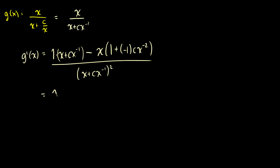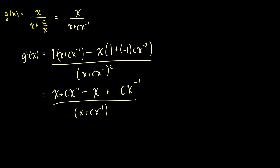We can simplify this a little bit. So this will be x plus cx to the negative 1 minus x, and then we subtract negative 1 cx to the negative 2, so we're adding x times c times x to the negative 2, which is really just cx to the negative 1. And this is all over x plus cx to the negative 1 squared. Our cx to the negative 1s are going to add together, but our x's will cancel. So we're going to get 2 times cx to the negative 1 over x plus cx to the negative 1 squared. At this point it becomes a bit of a pain to simplify any further, so I won't bother expanding it out.